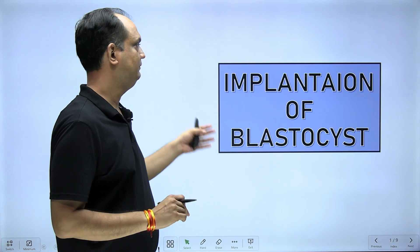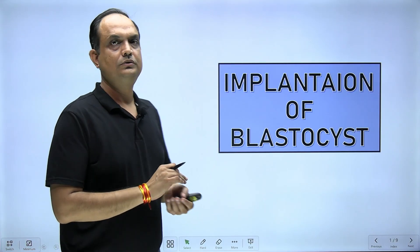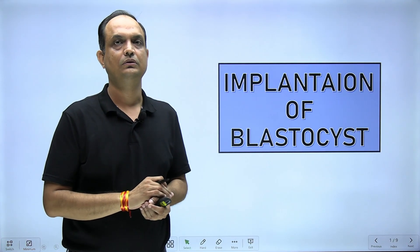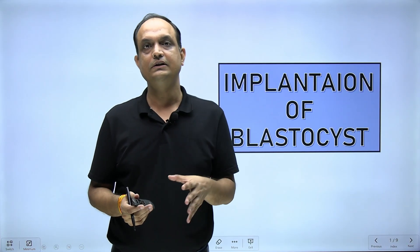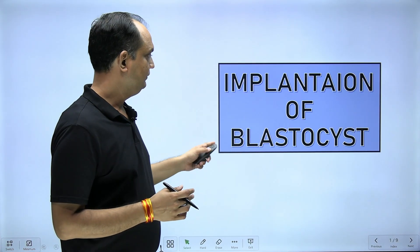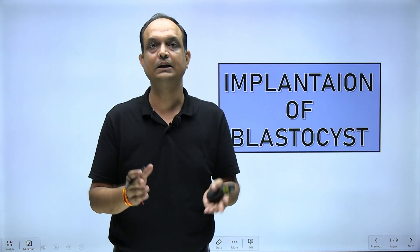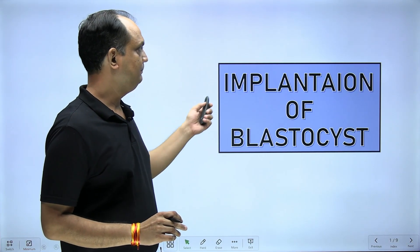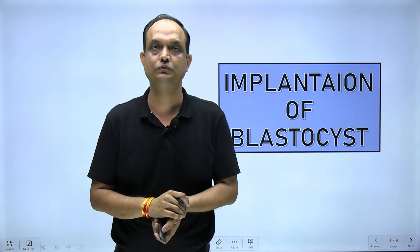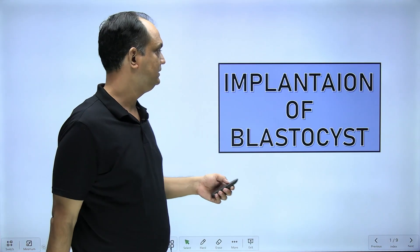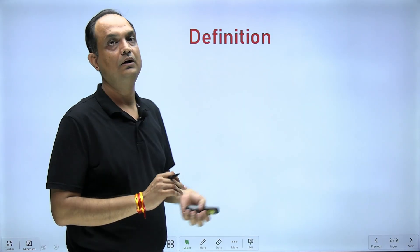Hello students, today we will discuss implantation. When talking about the changes in the first week of fertilization, you have the cleavage, and after cleavage there is a formation of the blastocyst. This blastocyst stage is also covered by zona pellucida. When implantation will take place, the first prerequisite is the removal of zona pellucida. As soon as the zona pellucida disappears, the process of implantation starts.